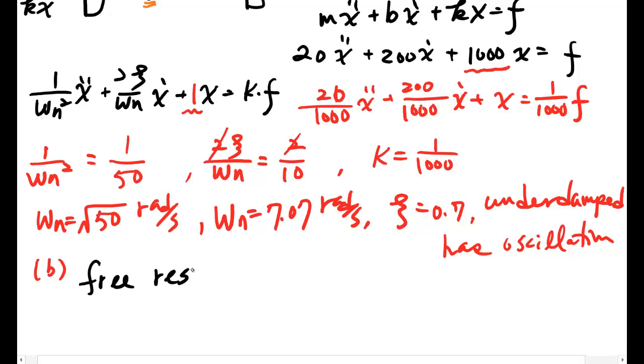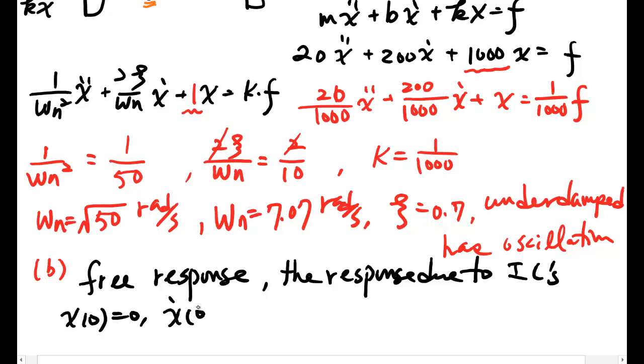For free response, you have to find response due to initial conditions. So plug in these initial conditions into the table or the formula sheet, and you get x of t from the equations.